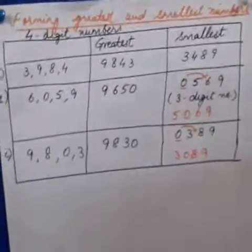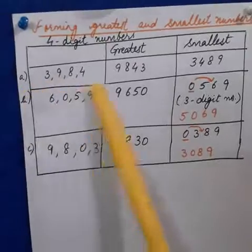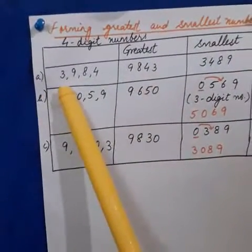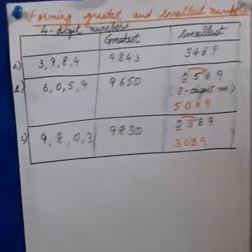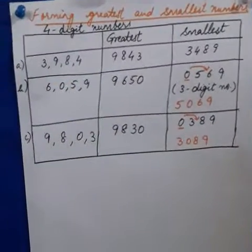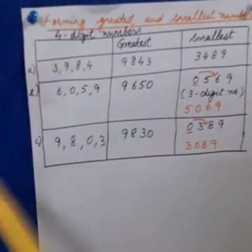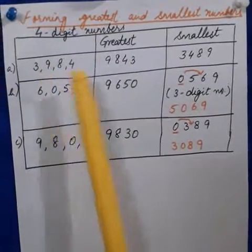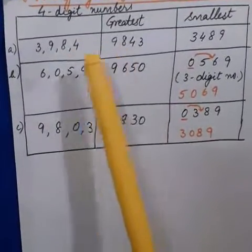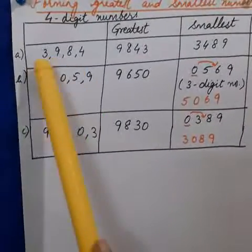Now, moving to the topic of forming the greatest and smallest number. This is a very important topic. Let us see the example forming a 4-digit number. The digits given to you are from 3984. You have to form the greatest and smallest number using these 4 digits only. For the greatest number: 9 is greatest, then 8, then 4, then 3. So 9843 is the greatest number formed using these digits.